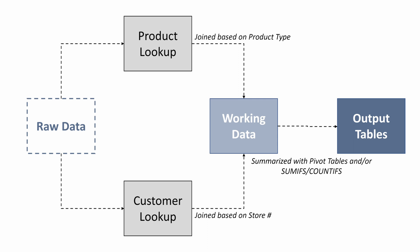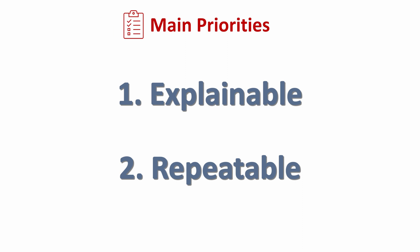We started with the raw data and joined our two lookup tables: the product lookup file and the customer lookup file. For the product lookup, we joined based on product type — the anonymized product name, product A through F. For the customer lookup, we joined based on store number, store one through a hundred. We transformed those into our working data, then summarized the revenue column with pivot tables and/or SUMIF and COUNTIF. That is what is in our output table. This is hopefully a good example of how you can communicate your process in a structured, clear way to someone not as familiar with the data.